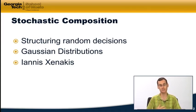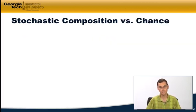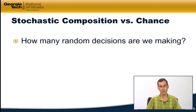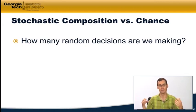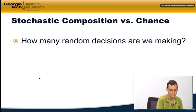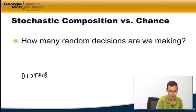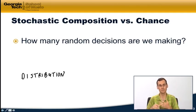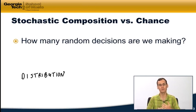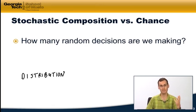We're going to look at probability distributions, and Gaussian distributions in particular. We'll take the example from the last video and try to make it sound more intentional and less random. We're also going to look at the music of one of the pioneers of stochastic composition, Iannis Xenakis. Stochastic composition versus chance comes down to how many random decisions we're making — hundreds or thousands — so we can shape the probability distribution in a meaningful way, stacking the odds so some outcomes are more likely than others.